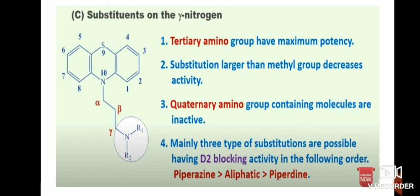Three types of substitutions are possible that have D2 blocking activity: piperazine, aliphatic, and piperidine. These three substitution types are used to treat antipsychotic disorders and also block the D2 dopamine receptors. They are piperazine, aliphatic, and piperidine. Thank you all.